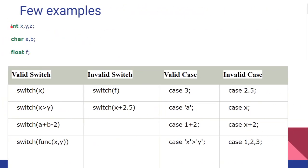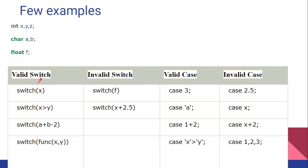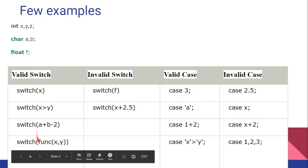To illustrate, suppose we declare integer x, y, z, character a, b, and float f. For valid switch expressions: switch(x) is valid as x is an integer; switch(x > y) is valid as it evaluates to a value; a logical or arithmetic expression is also valid; a function return value is also valid. These can all be switch expressions.